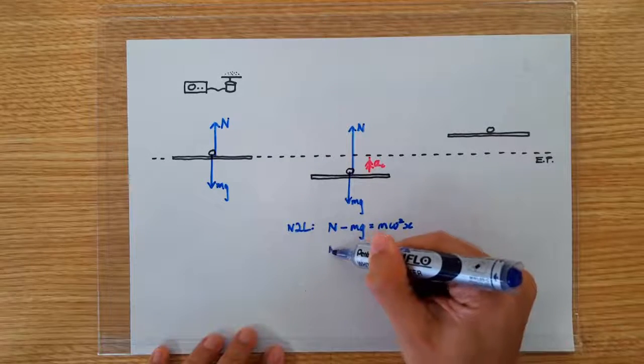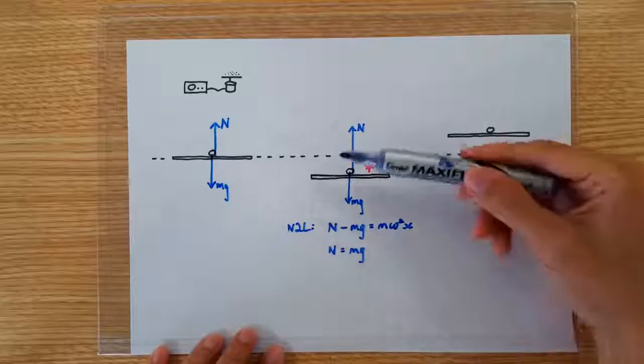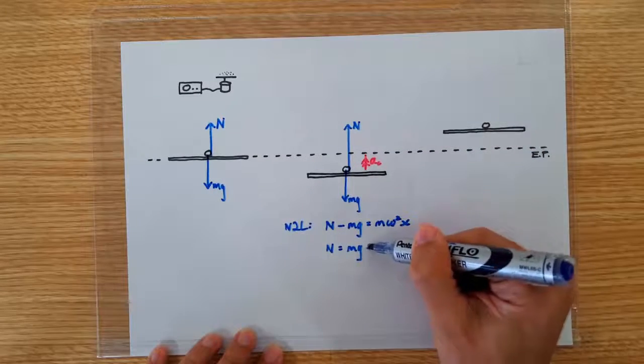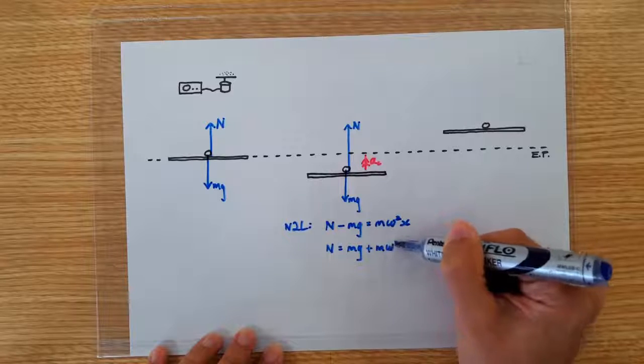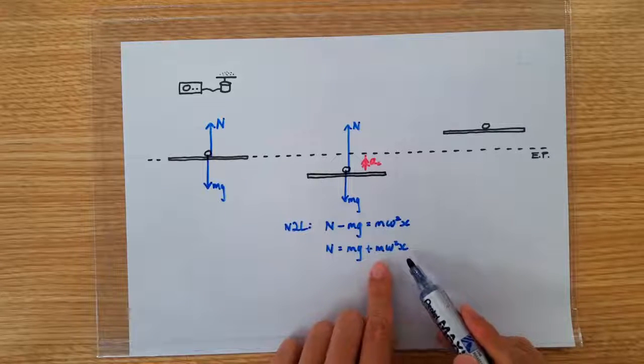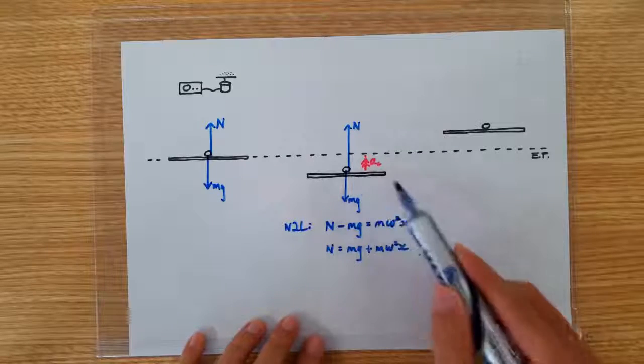So the mathematics show us quite clearly that whenever the plate is oscillating below the equilibrium position, the normal contact force is larger than mg by this amount m omega square x, which is basically the required restoring force for the sand particle to keep up with the SHM of the plate.